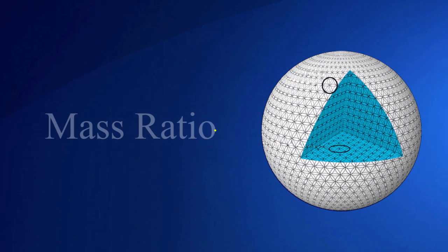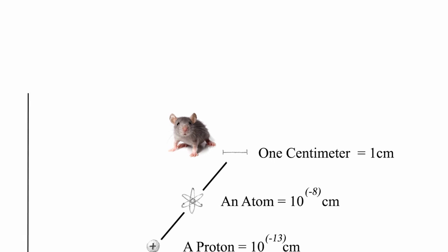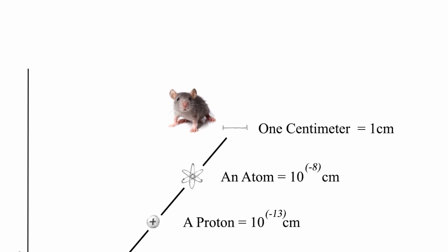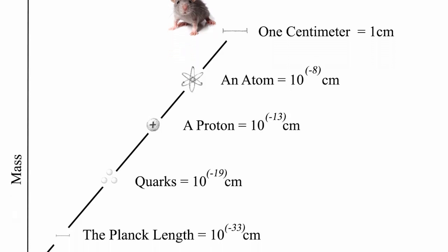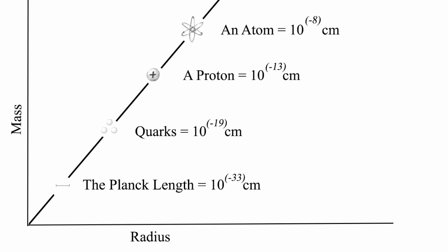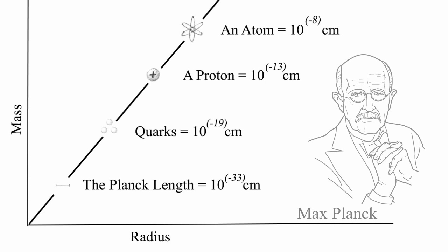Well, you know how pi is the ratio between circumference to diameter? Well, the mass ratio is between surface area to volume. But to fully understand the beauty of the mass ratio, we must first look at the smallest thing in the entire universe. Smaller than an atom, a proton, and even quarks. All the way down to the Planck length. 10 to the minus 33 centimeters. Discovered by Nobel Prize winning physicist Max Planck.